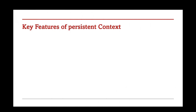Now let's quickly go over some key features of the Persistence Context. First up, caching. When you fetch an entity, JPA stores it in memory. So if you fetch the same entity again within the same transaction, JPA won't hit the database again — it just pulls the data from memory.